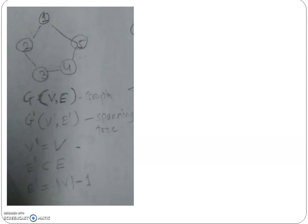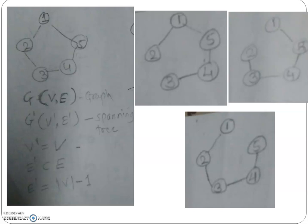We can also represent E-dash equal to V minus 1, meaning the edges of the spanning tree equal the vertices of the graph minus 1. Let's see how I can represent the spanning tree for this graph. One possibility is 1 connected with 5, 5 with 4, 4 with 3, and 3 with 2. Another possibility is 1 connected with 2, 2 with 3, 3 with 4, and 4 with 5.